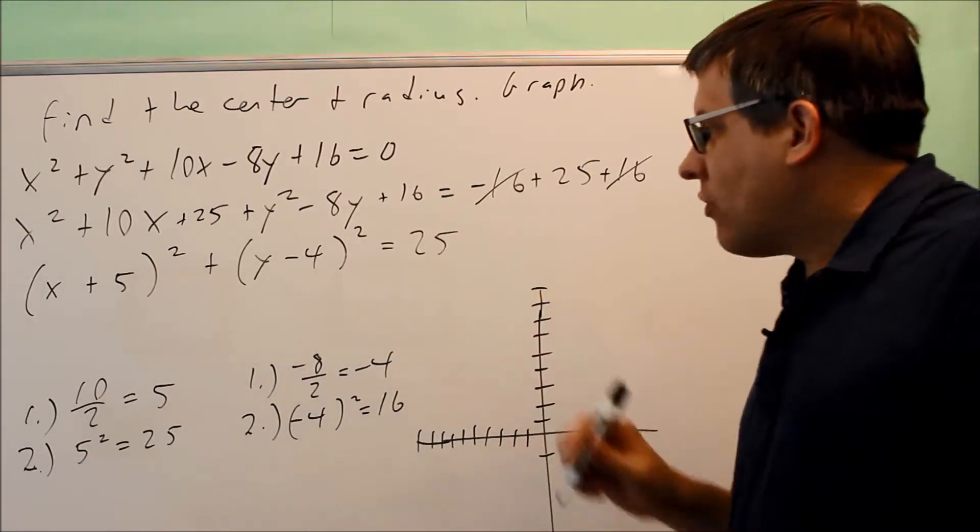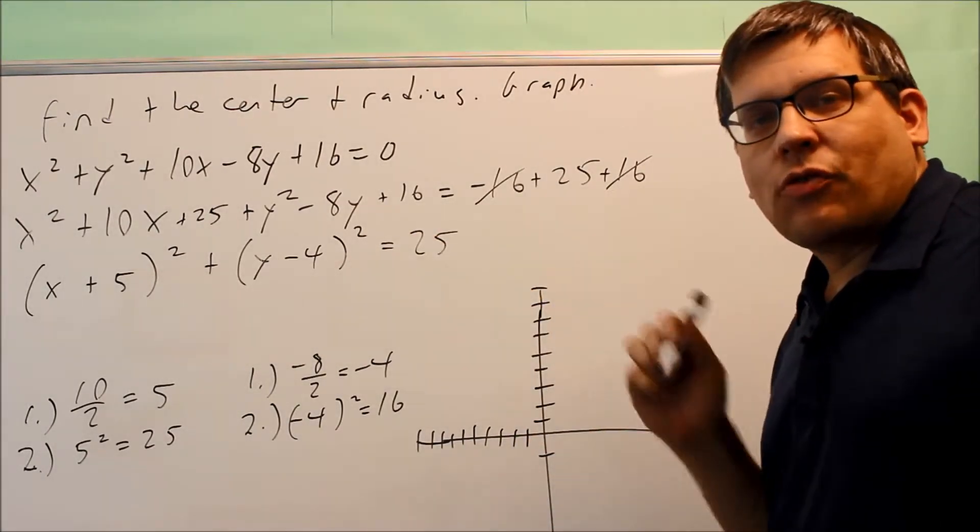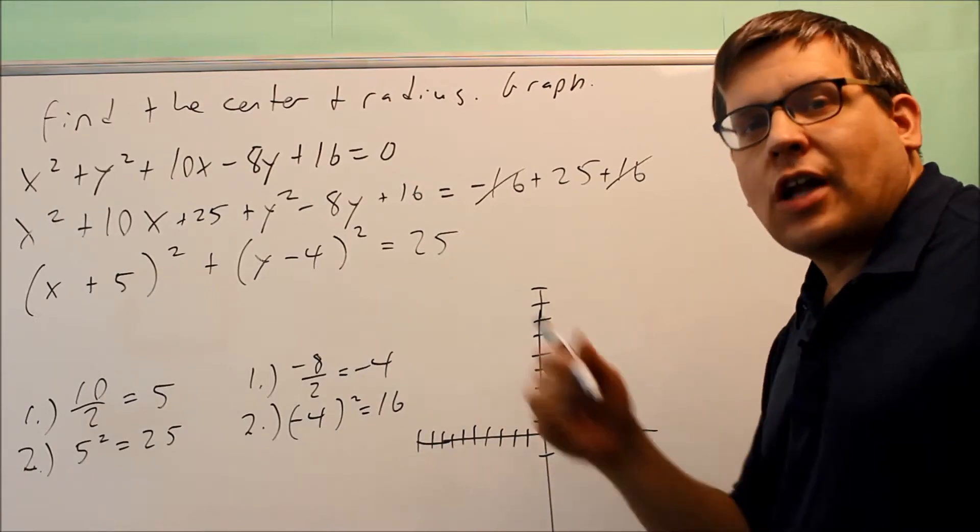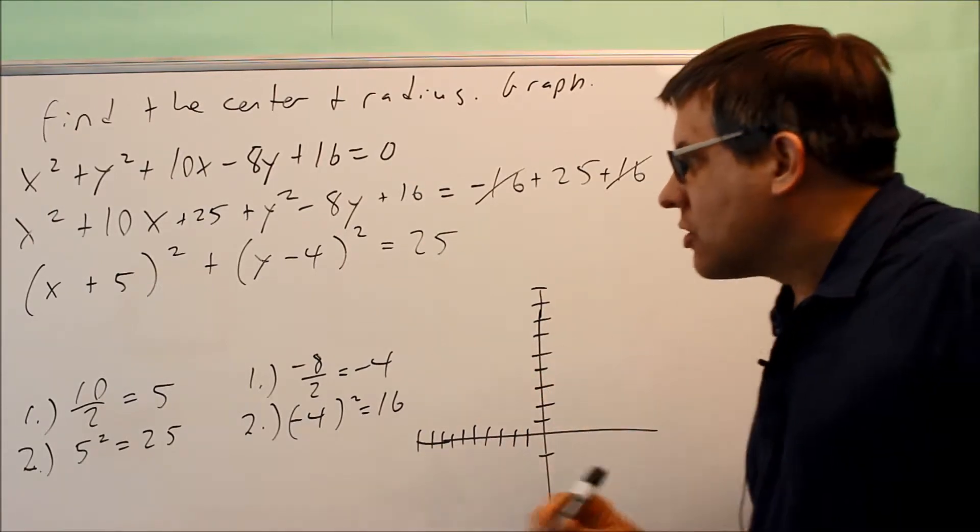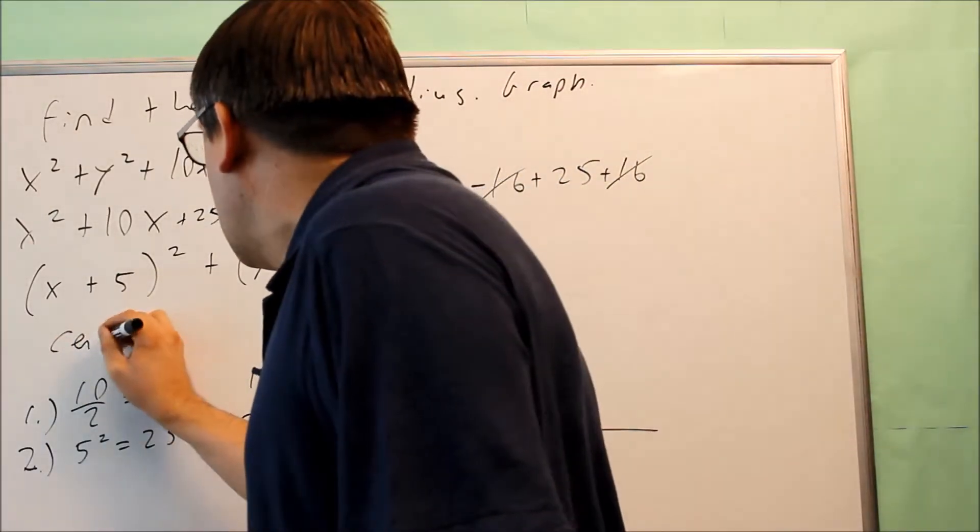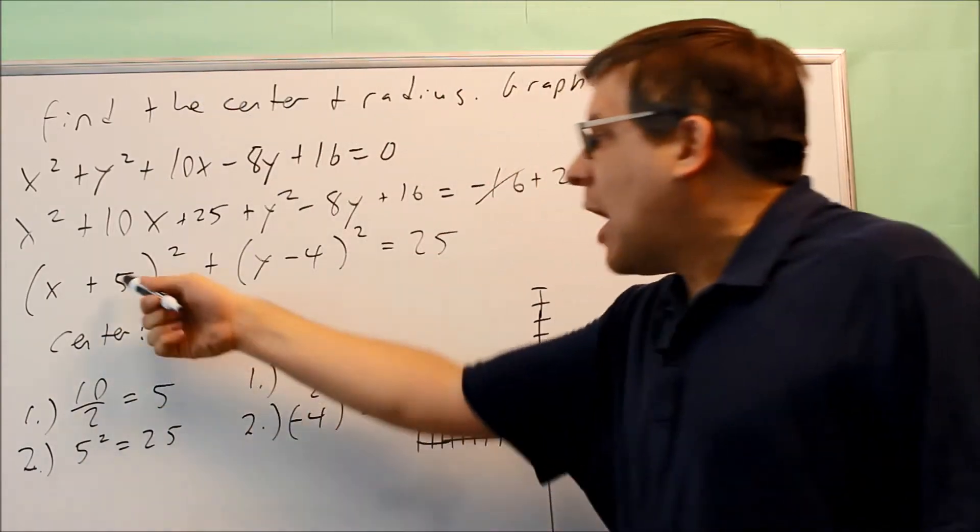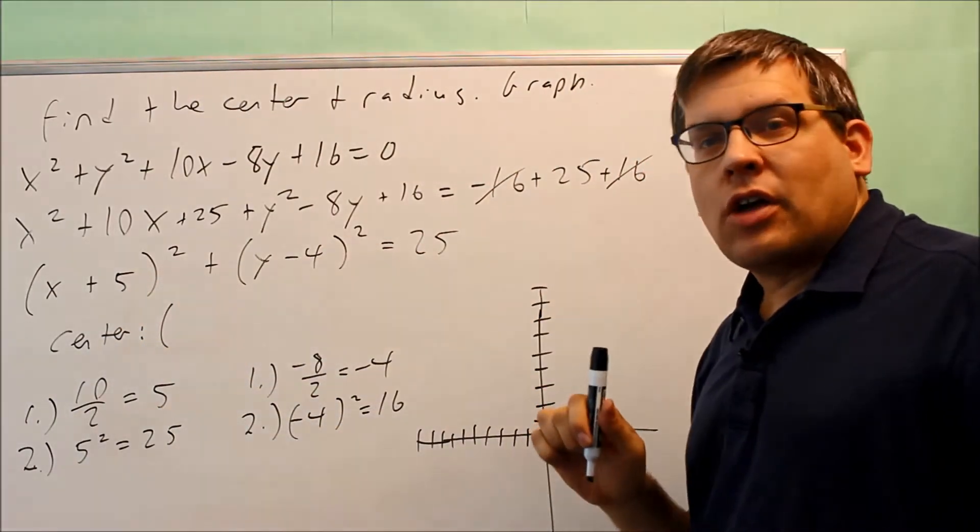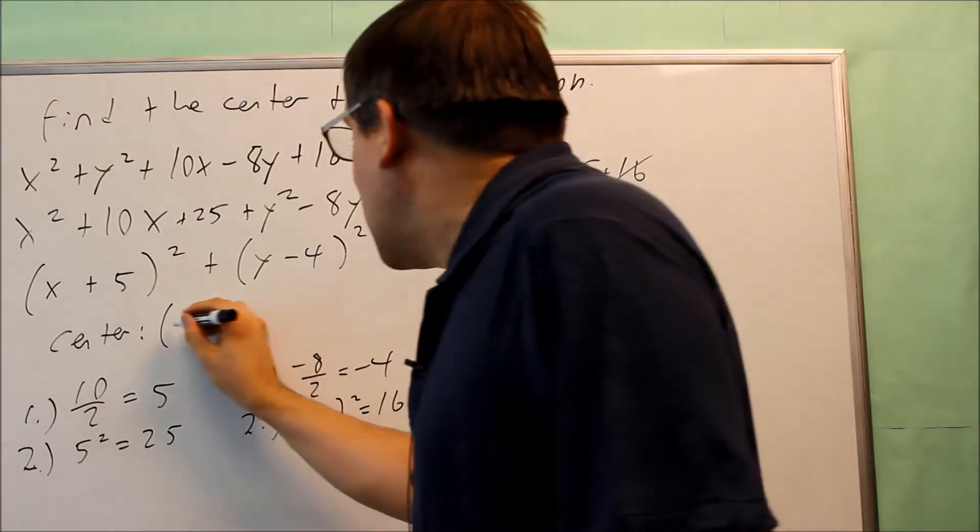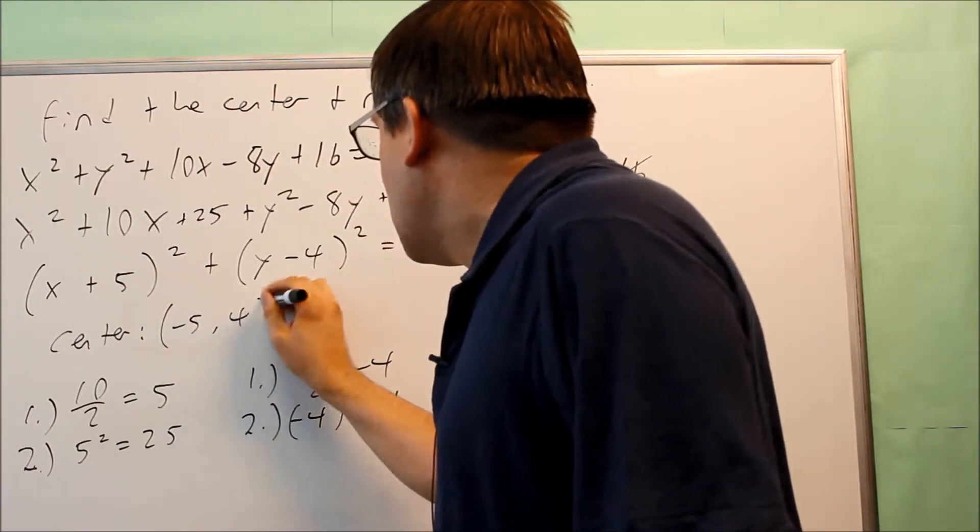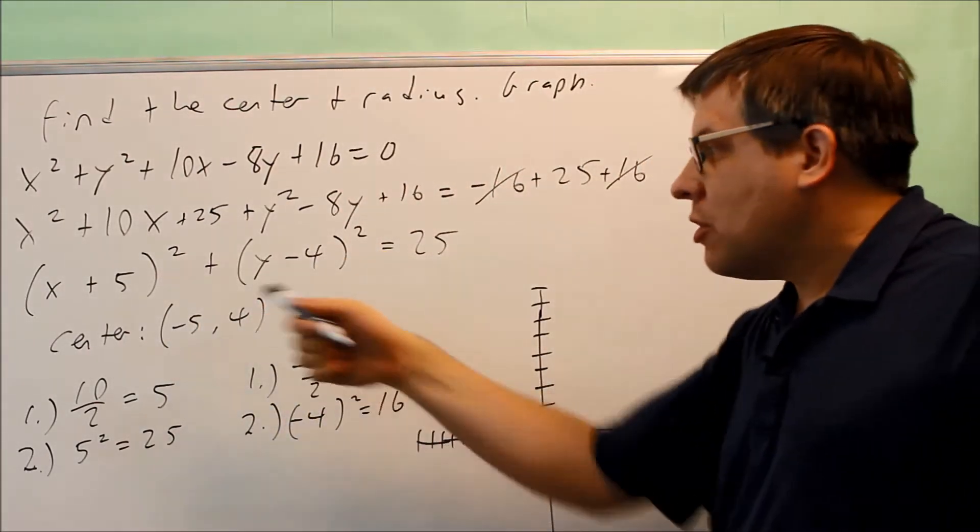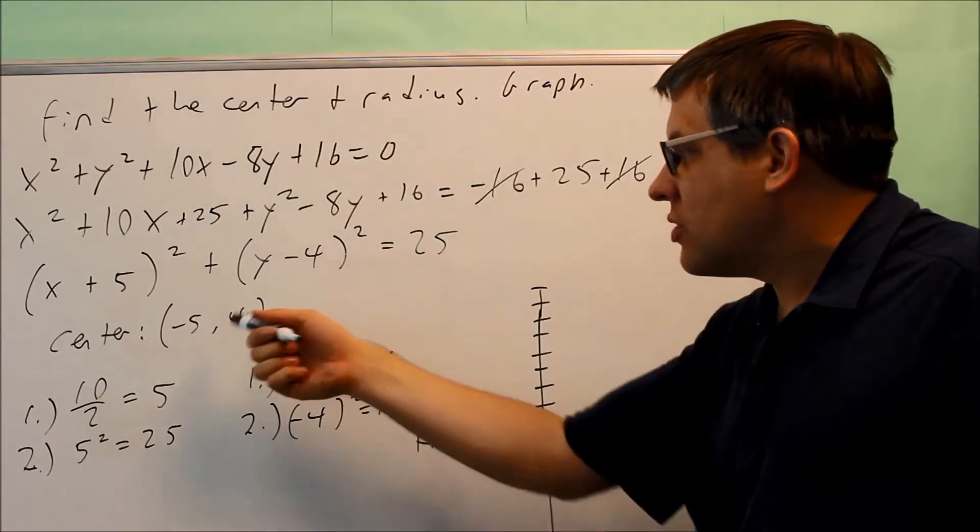So now I have this written in the proper standard form. Since I have it in this form, I'm ready now to find my center and my radius. My center is going to be opposite sign of this and opposite sign of that. So opposite sign of plus 5, I get negative 5. And then it was negative 4, now it's going to be positive 4. So my center is negative 5, 4.